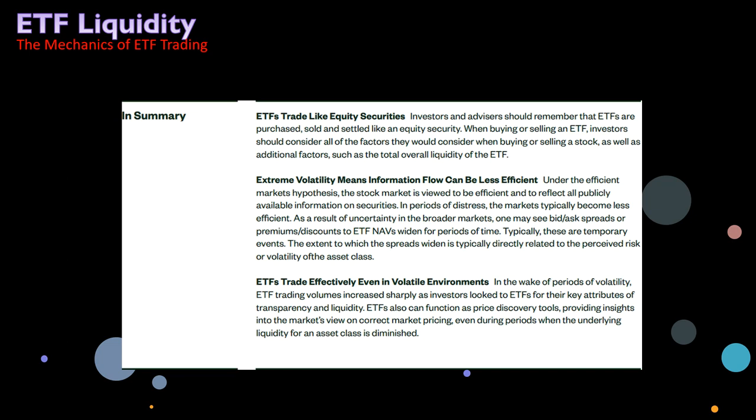Extreme volatility means information flow can be less efficient. Under the efficient market hypothesis, the stock market is viewed to be efficient and to reflect all publicly available information on securities. In periods of distress — when there are significant gaps everywhere — markets typically become less efficient as a result of uncertainty. One may see bid-ask spreads or premiums/discounts to ETF NAVs widen for periods of time. NAV stands for net asset value. Typically these are temporary events, and the extent to which spreads widen is directly related to the perceived risk or volatility of the asset class.